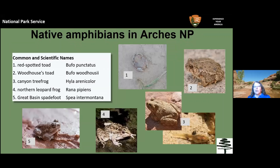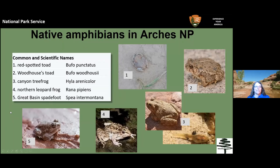The park is home to at least five native amphibians — the usual complement for the southeast area: red-spotted toads, Woodhouse's toad, canyon tree frogs, northern leopard frog, and Great Basin spadefoots. The red-spotted toad shown here is actually the only native amphibian specimen we found during our off-park surveys.